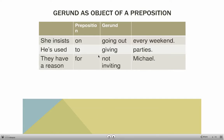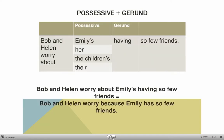As the object of a preposition: 'She insists on going out every weekend,' 'He's used to giving parties,' 'They have a reason for not inviting Michael.' Notice again how the negative is handled — 'not' is placed directly before the gerund.